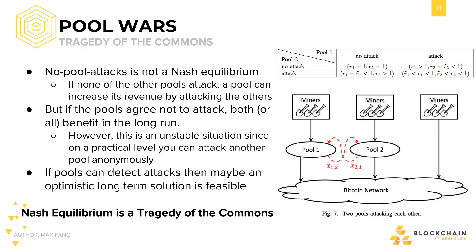So why don't they just not attack each other and make more profit? Well, the no-pool-attack scenario is not a Nash equilibrium. In other words, if both pools choose not to attack each other, they are not making as much profit as they could be — there are more profitable options. By attacking, they can increase their profit, and that's what rational actors want to do. Because of this, rational actors will eventually choose the Nash equilibrium if they're pursuing profit, and will continually attack each other.